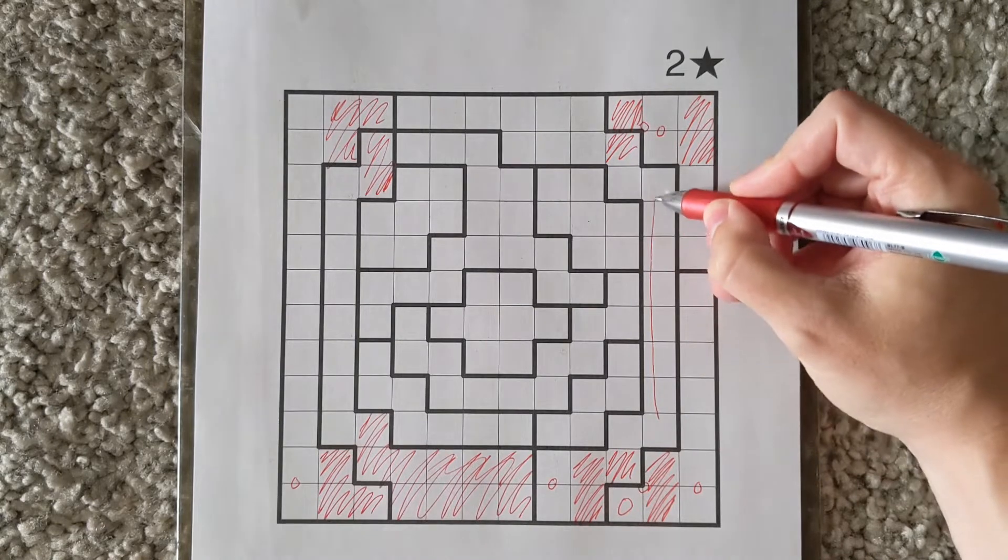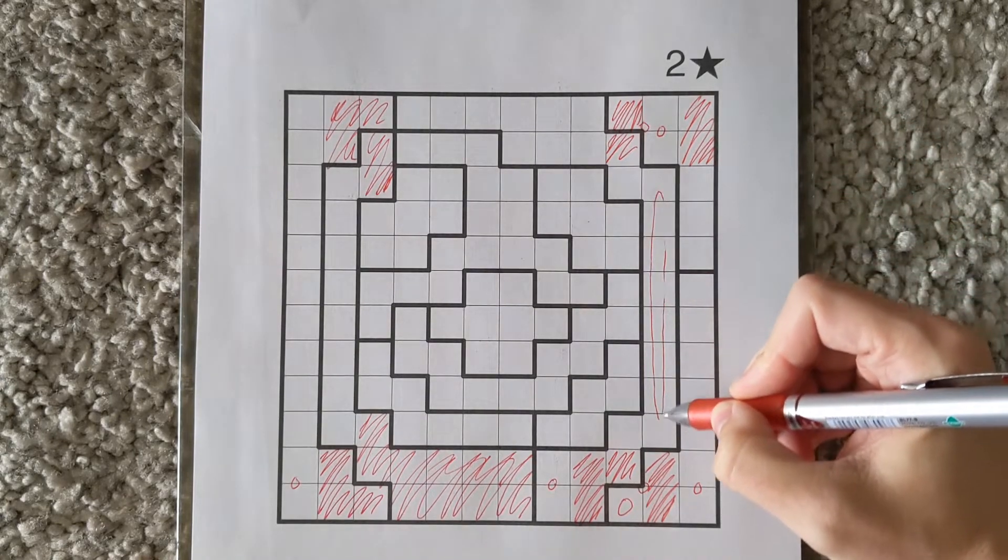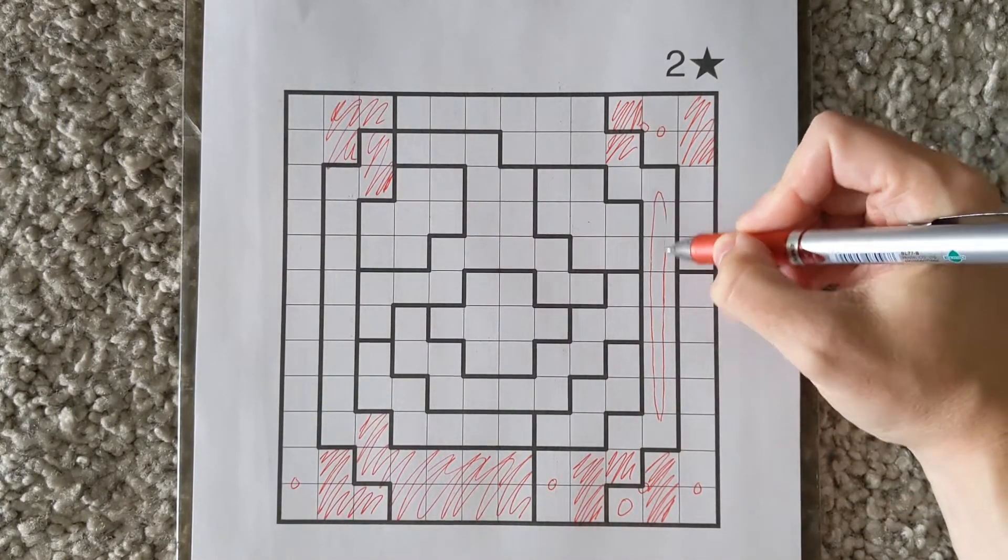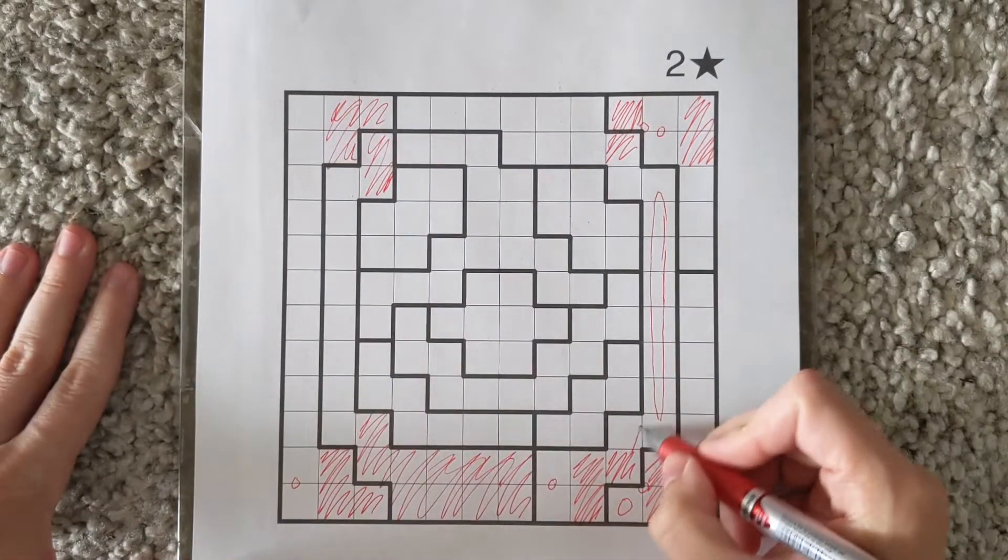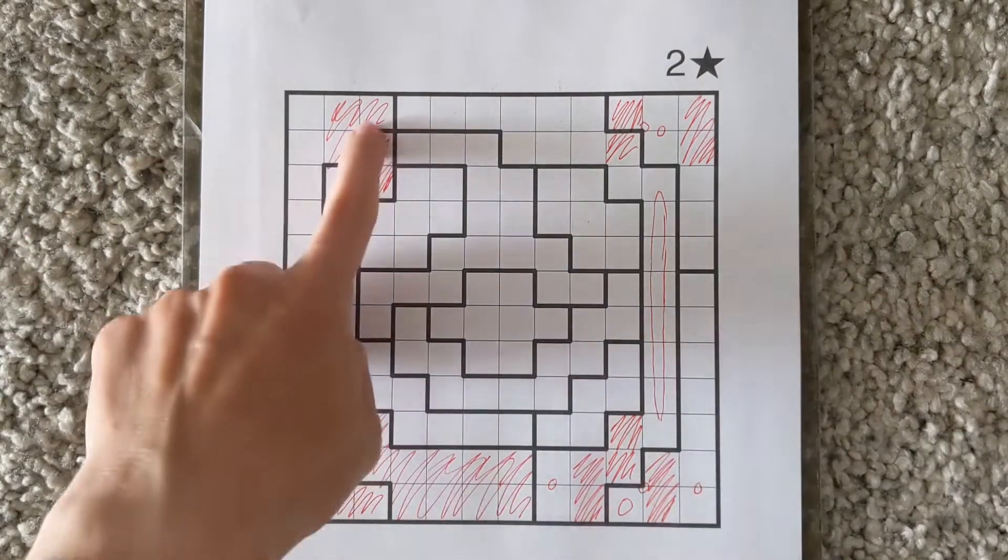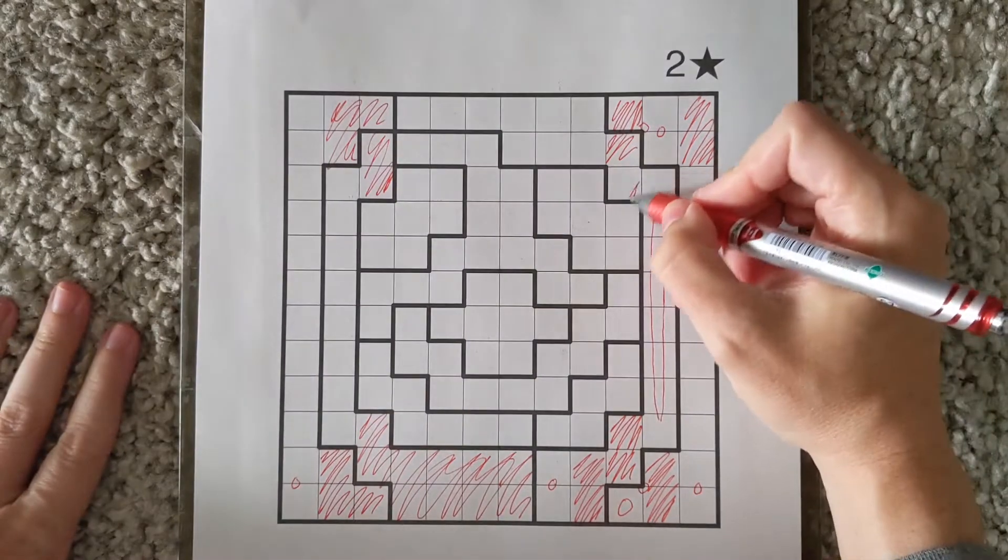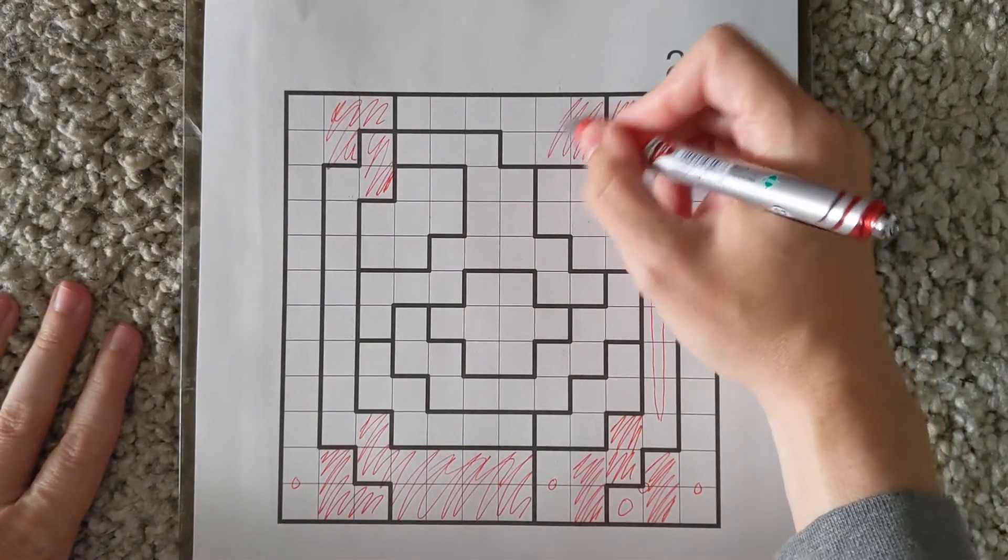I normally don't denote this because it's kind of a silly group to draw, but I'll draw it in for the sake of this video. If a star is somewhere in these cells, just as we've done elsewhere, everything else in that region is no longer a star.